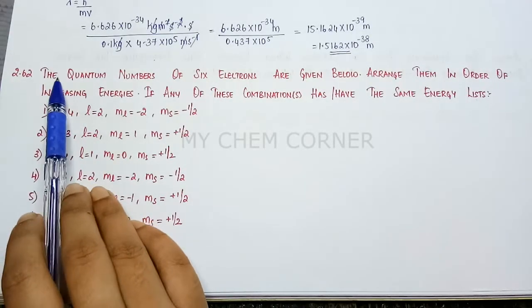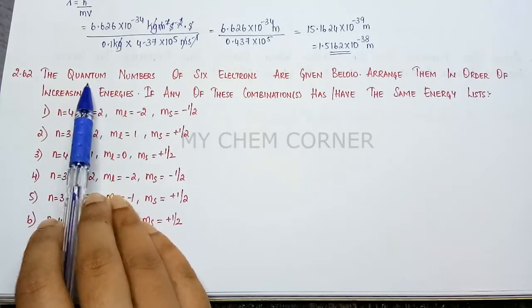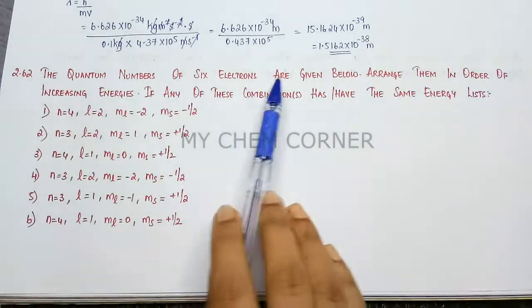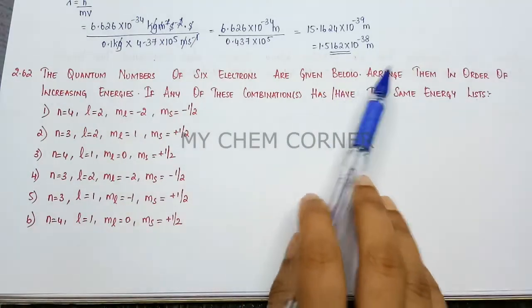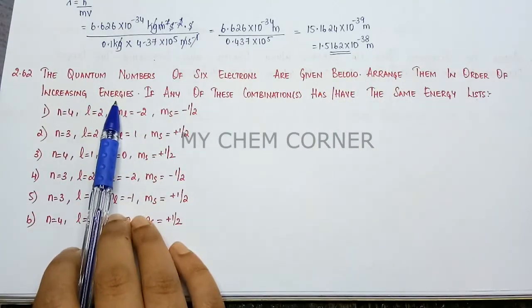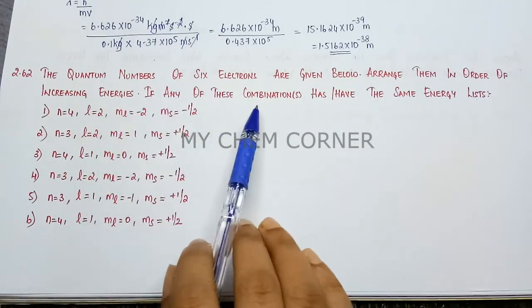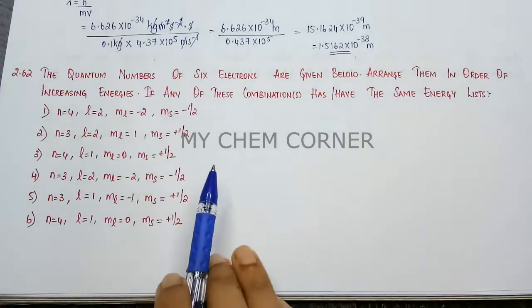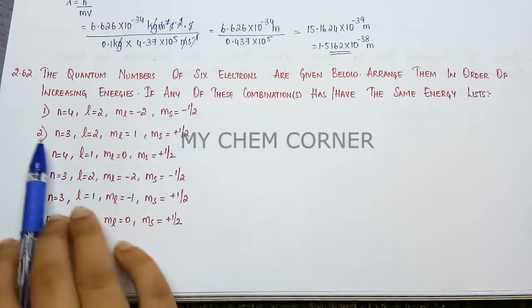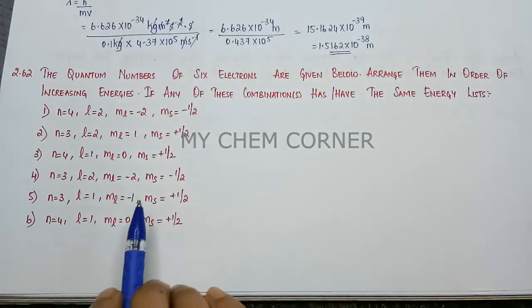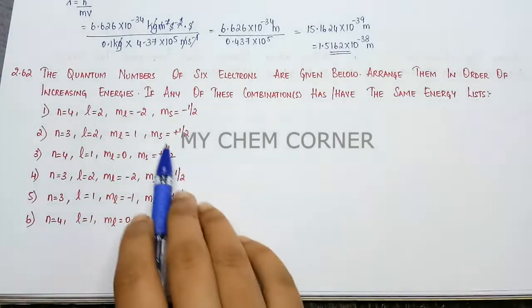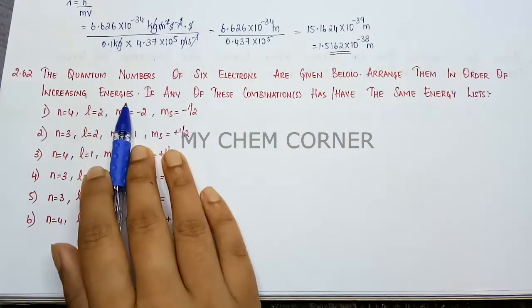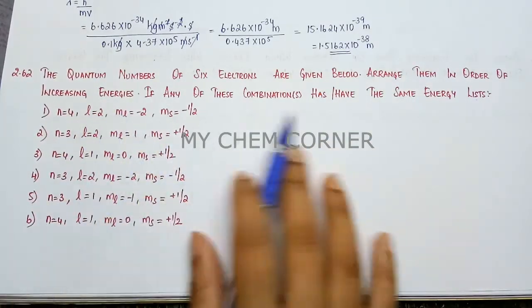Next is question number 2.62. The quantum numbers of six electrons are given below. Arrange them in order of increasing energy. If any of these combinations have the same energy, show that. All quantum numbers are given for six different electrons. We need to arrange them in increasing order and also show if they have any same energies.